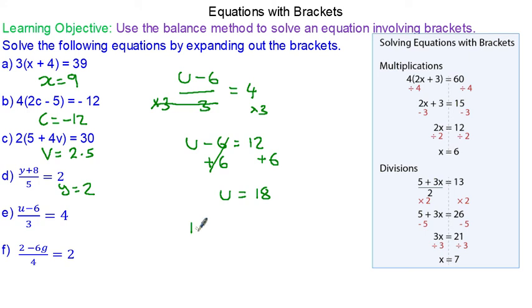Put 18 back into the equation. 18 minus 6 divided by 3. 12 divided by 3 does make 4.